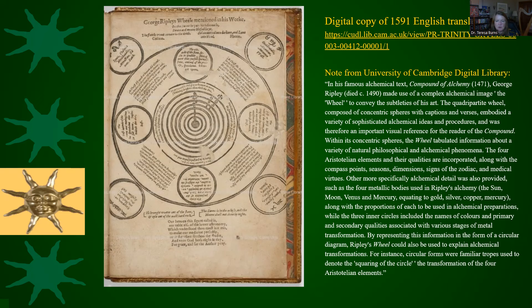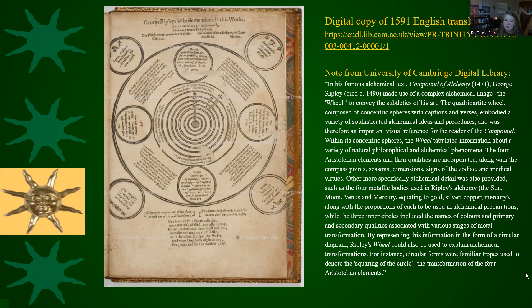Within its concentric spheres, the wheel tabulated information about natural philosophical and alchemical phenomena: the four Aristotelian elements — note this is Aristotelian, whereas with Dee we've been talking about him as a Neoplatonist leaning on works like Plato's Timaeus and the Platonic elements and solids. The elements are the same with Plato and Aristotle; what's different is what they correspond to. The wheel also incorporates compass points, seasons, dimensions, signs of the zodiac, medical virtues, and more specifically alchemical detail such as the four metallic bodies used in Ripley's alchemy — the Sun, Moon, Venus, and Mercury, equating to gold, silver, copper, and mercury — along with the proportions of each to be used in alchemical preparations.